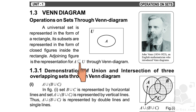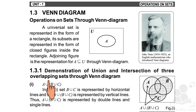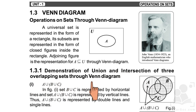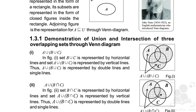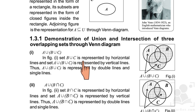A belongs to U — the universal set — through the Venn diagram. We will now see the demonstration of union and intersection of three overlapping sets through the Venn diagram.